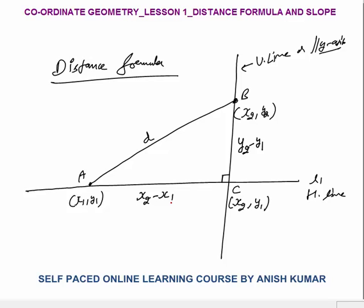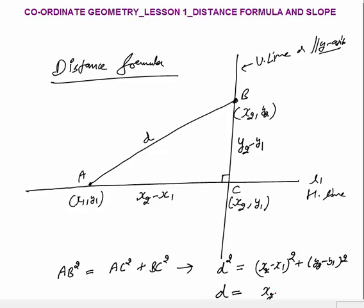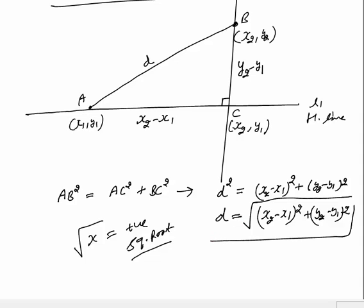Now applying the Pythagorean theorem to this right-angle triangle: AB² = AC² + BC². So d² = (x2 - x1)² + (y2 - y1)². Therefore, distance D = √[(x2 - x1)² + (y2 - y1)²]. This square root symbol means the answer is always positive, and distance can never be negative.